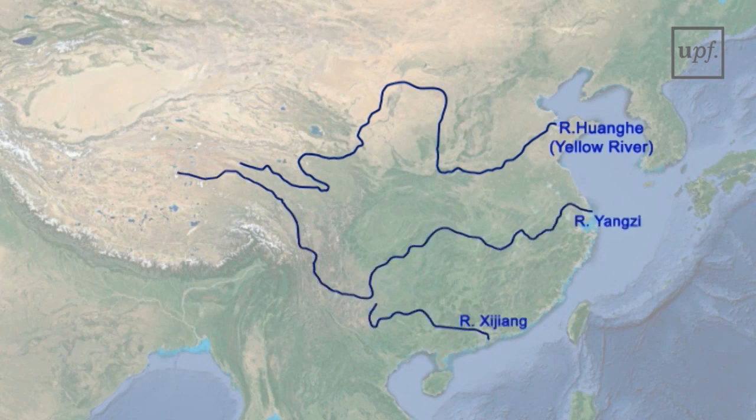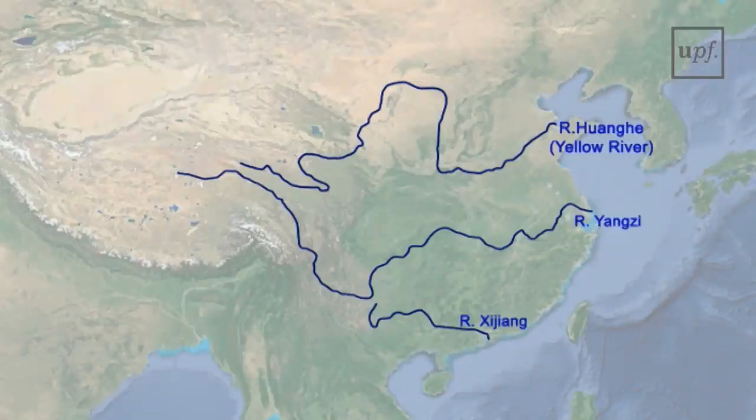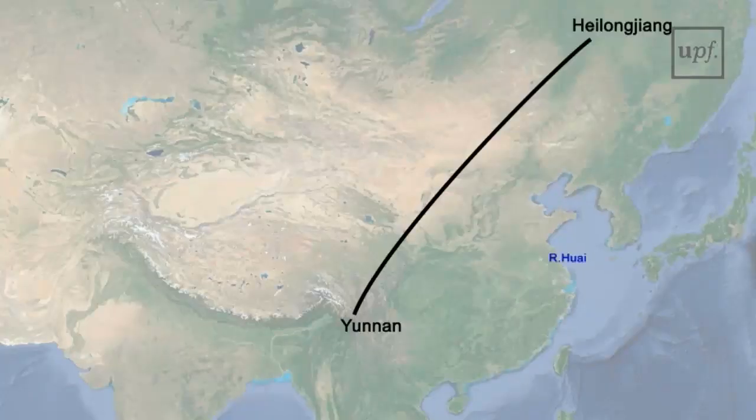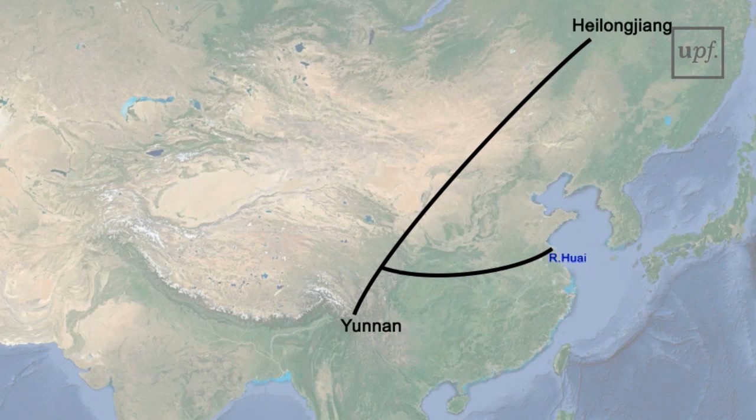North-south waterways are often man-made, as is the case with the very large-scale 6th-century Grand Canal that links the Yangtze Basin with the North China Plain. East China is the part that corresponds basically with China proper that we have talked about in previous lectures. East China can be divided in turn between North and South China by a line that stretches along the river Huai.